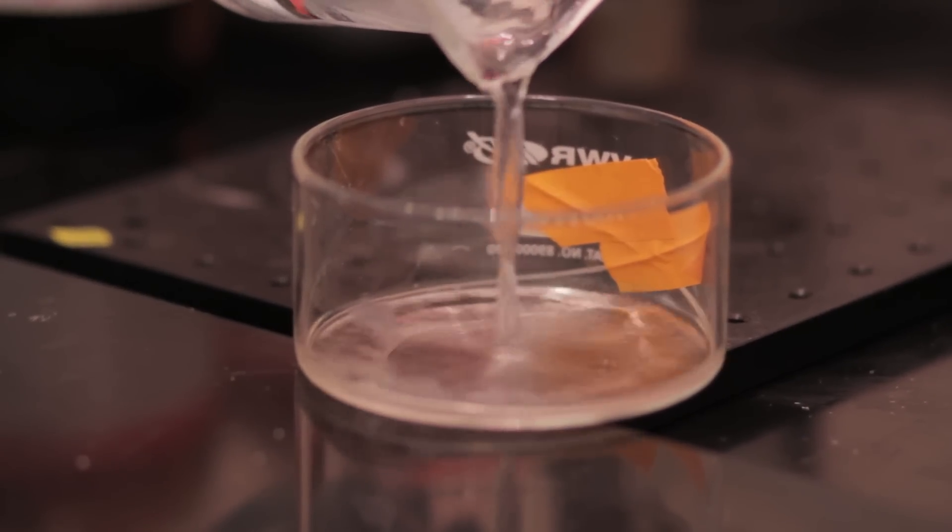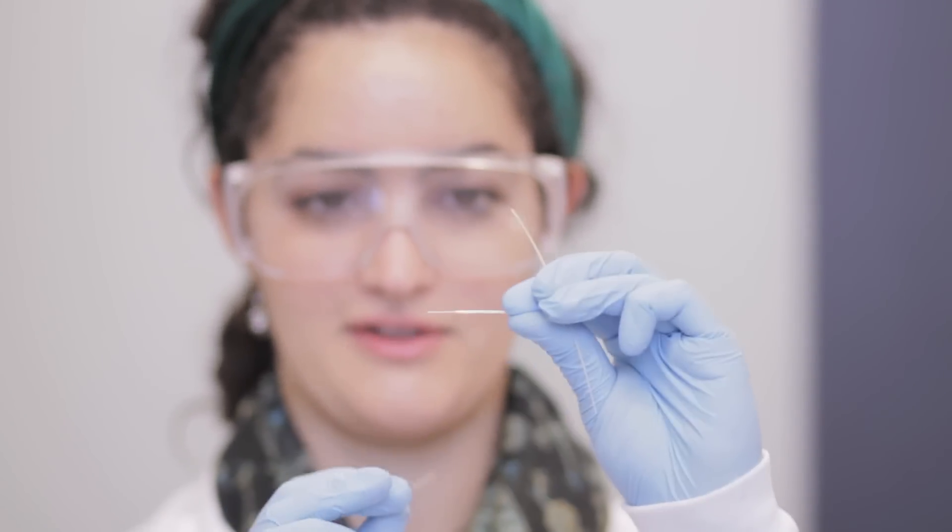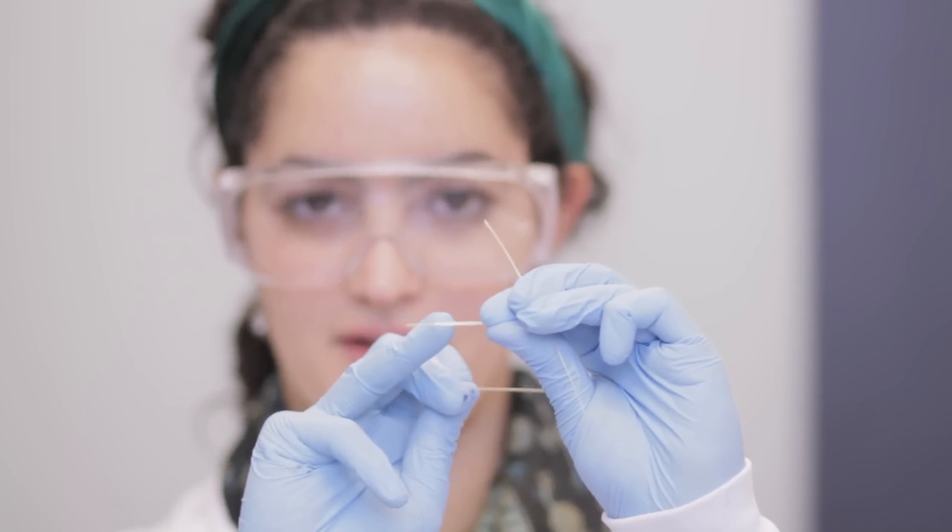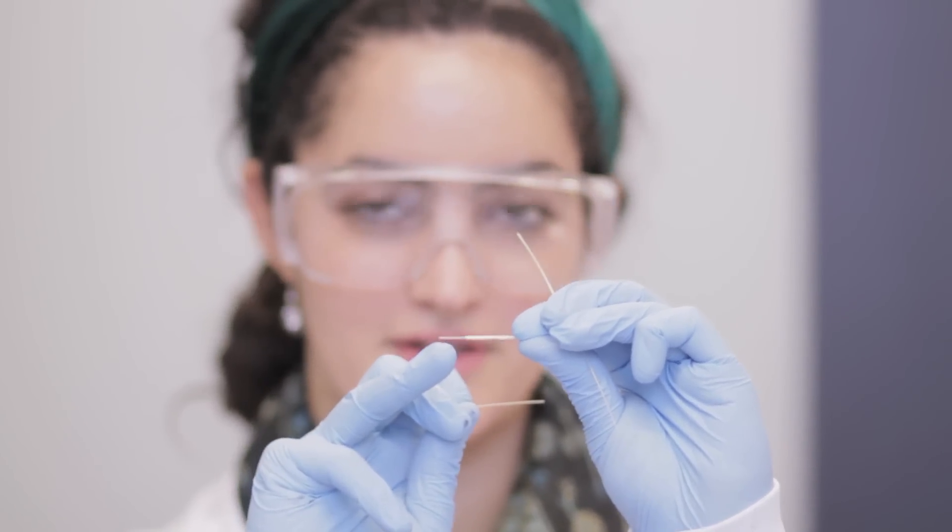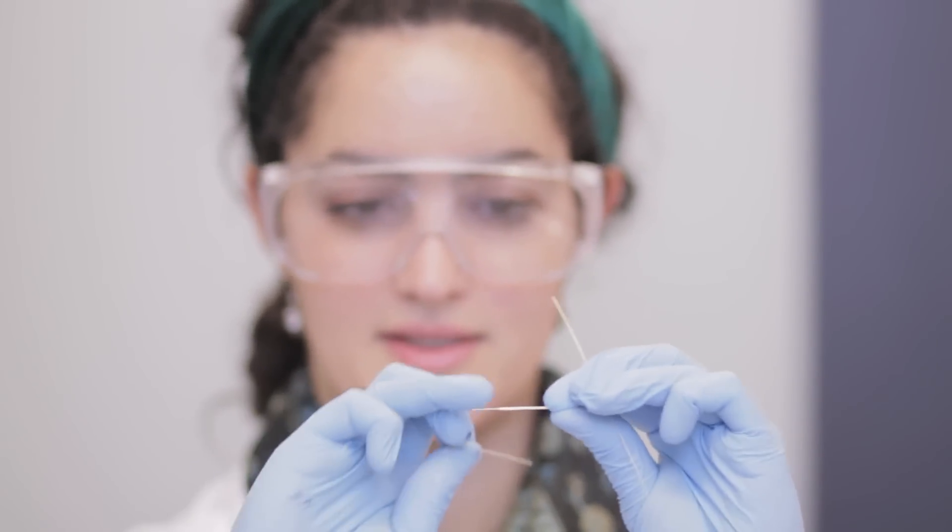We started off with a diameter similar to this one, which is about the diameter of a fishing wire. This piece here shows the transition from that thicker fishing wire to a diameter closer to human hair. It's this thinner piece here that we're going to start using to connect to a board and prepare for implantation.